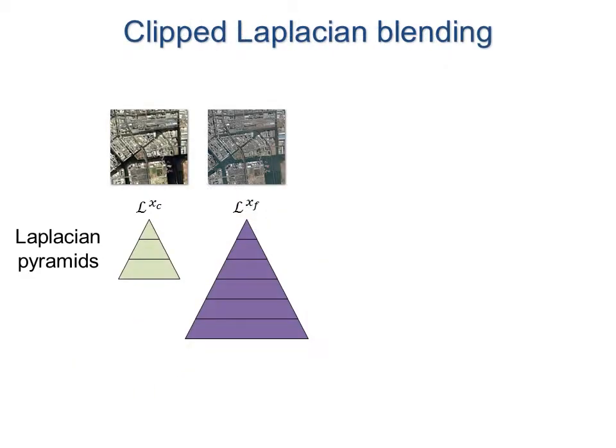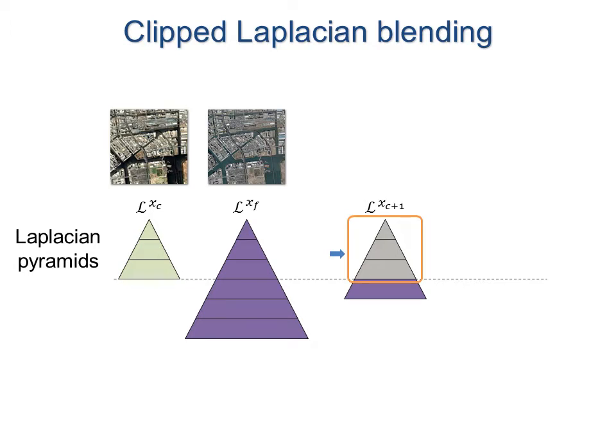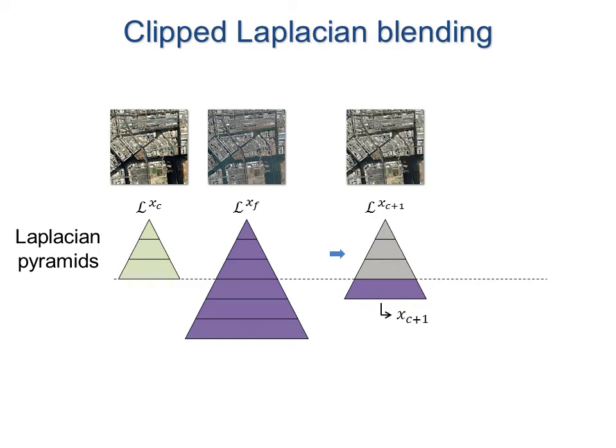The idea of clip-laplacian blending is to first form the laplacian pyramids of the two input images. Then for each intermediate level, we create a new laplacian pyramid by linearly blending all of the coarse levels, but keeping all of the fine detail levels intact. We convert this laplacian pyramid to obtain the desired image, and then repeat the process for other intermediate levels.